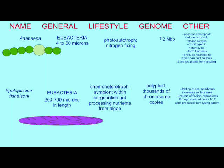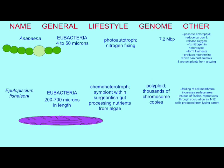Although prokaryotes do not have the internal membrane system that eukaryotes possess, some prokaryotes have a highly folded cell membrane which creates some internal compartmentalization and allows for a greater complexity of metabolic reactions. Many of the cyanobacteria also possess a highly folded cell membrane.